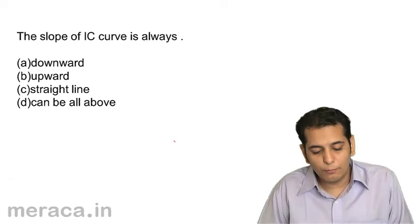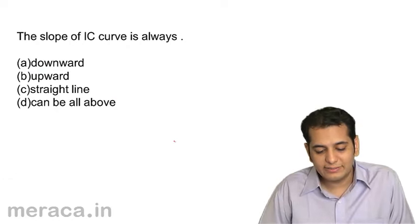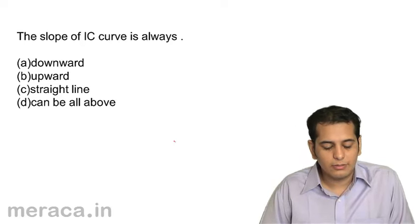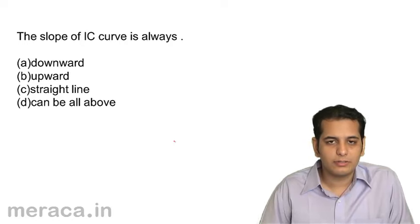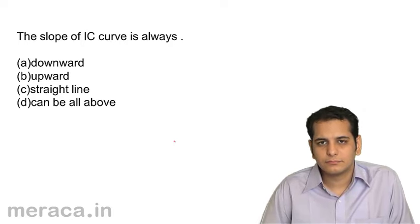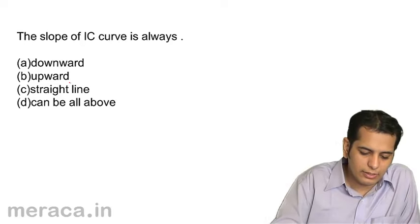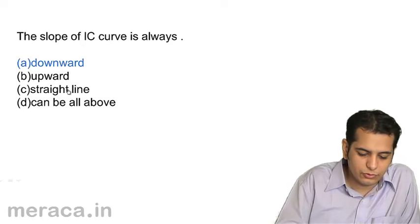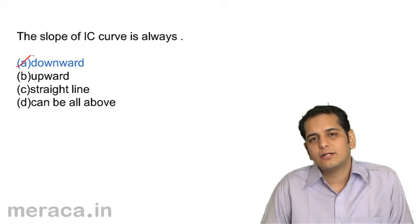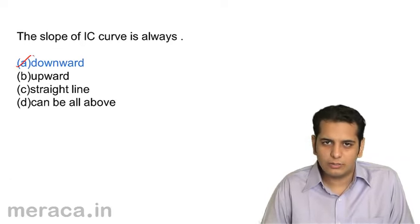Next: the slope of the IC curve is always A) downward, B) upward, C) straight line, or D) can be all. The IC curve always slopes downward.